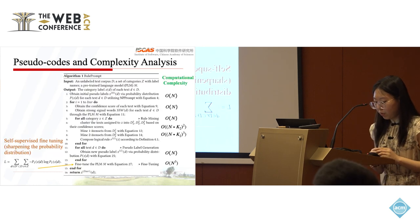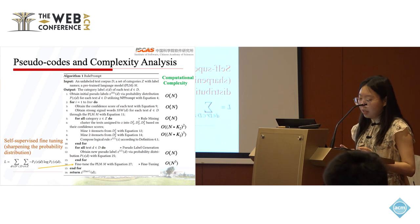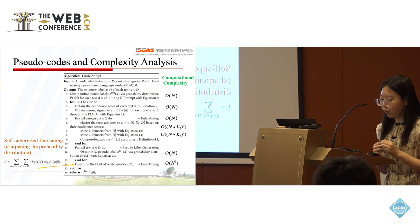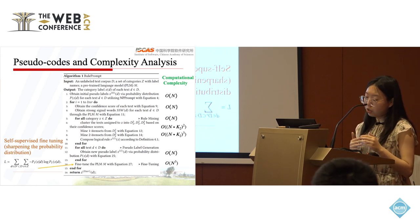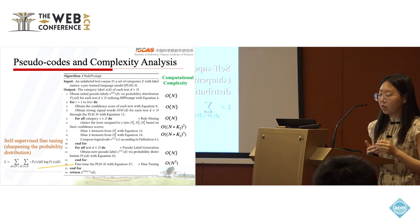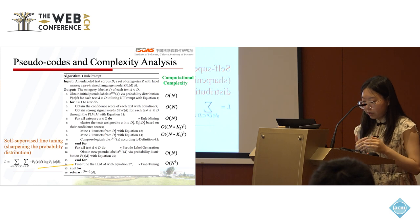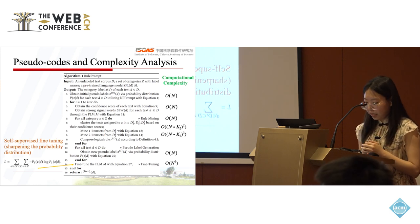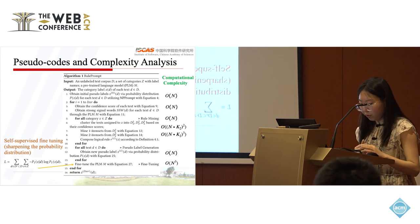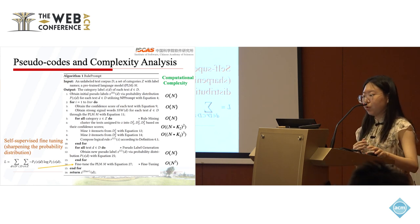Here is the complexity analysis. It can be seen that our proposed approach Rule Prompt is scalable for larger data sets. Moreover, since the size of the sub-rule is fixed in our approach, more complex rules would not bring greater computational complexity. In the self-supervised fine-tuning module, we adopt self-supervised entropy as a loss function to sharpen the probability distribution.